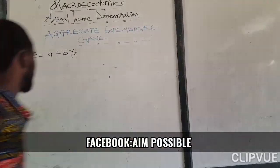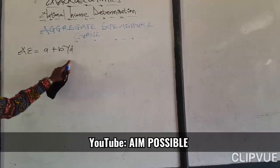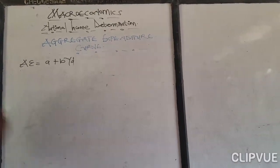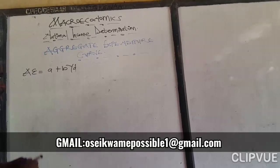Good. Now basically the aggregate expenditure function is more or less like the consumption function. So we are going to draw like the consumption curve.